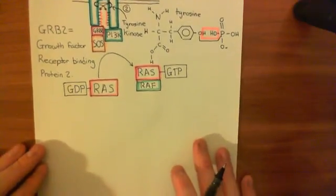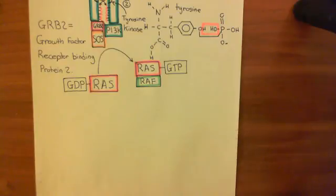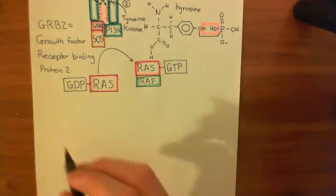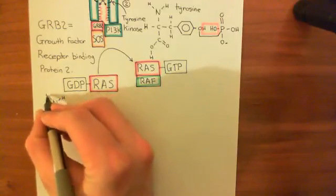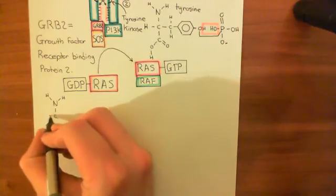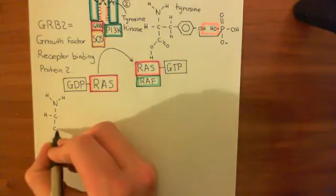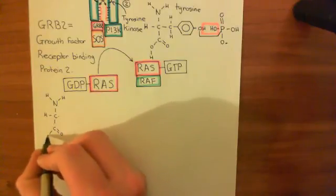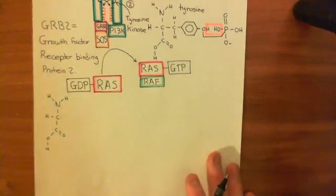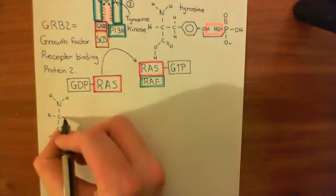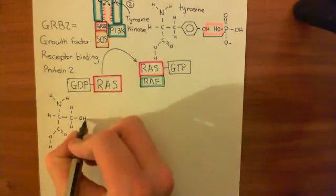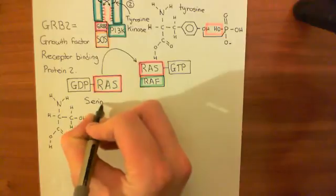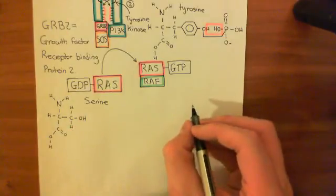RAF is a serine-threonine kinase enzyme. Let's have a reminder of the structure of serine and threonine amino acids. Starting with the basic amino acid structure — amino group, alpha carbon with its hydrogen, and carboxylic acid group — the R group of serine is a methylene group with a single hydroxyl group coming off it. This is the amino acid serine.